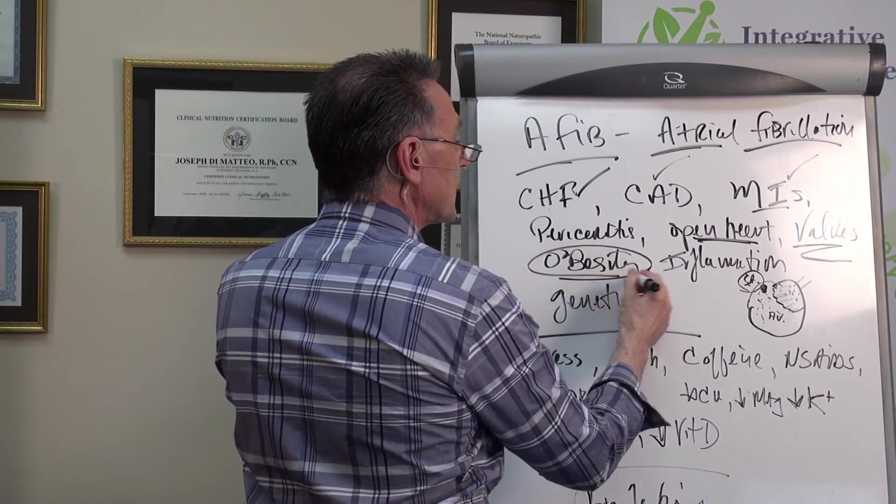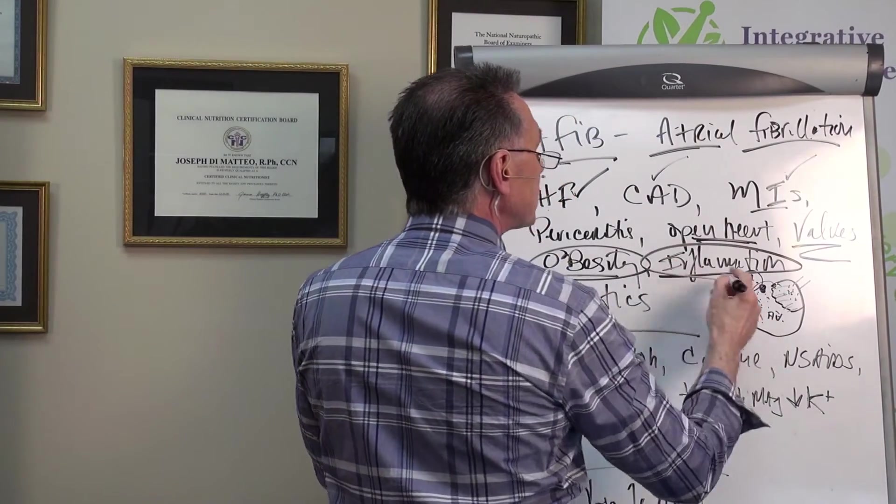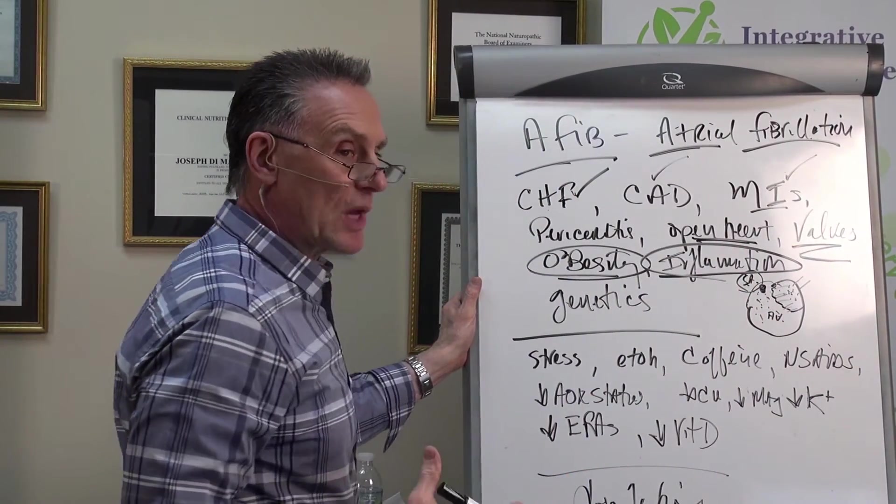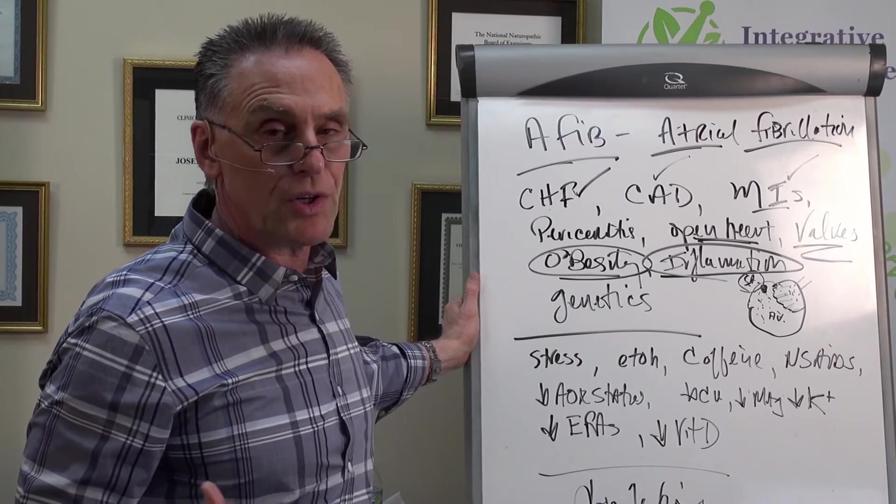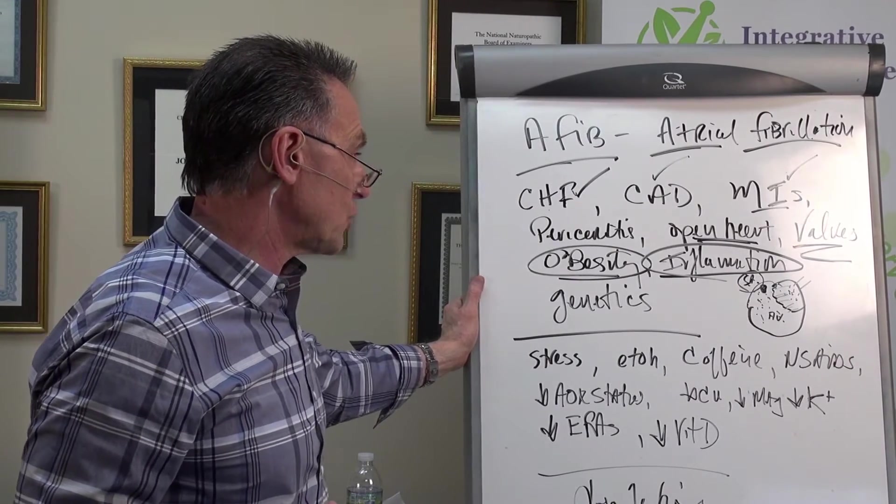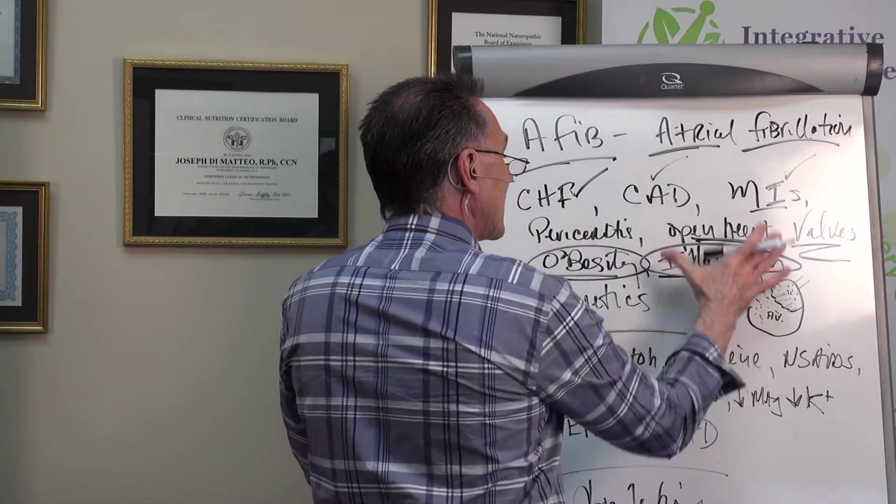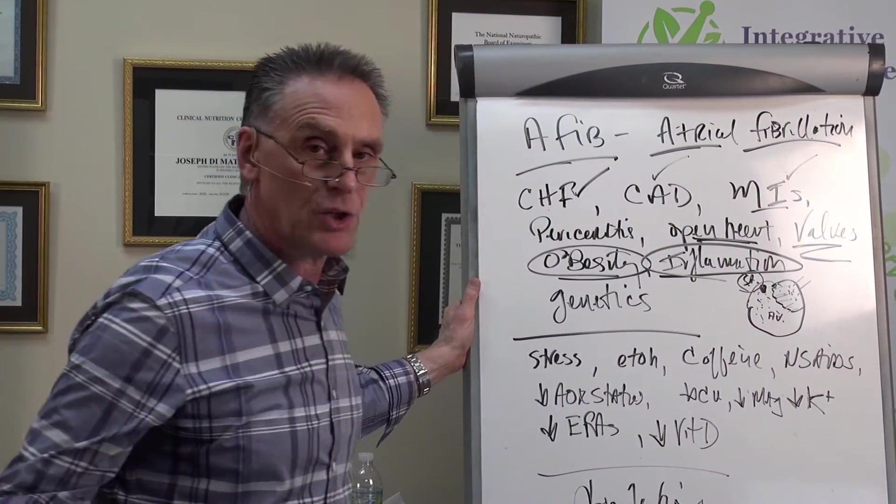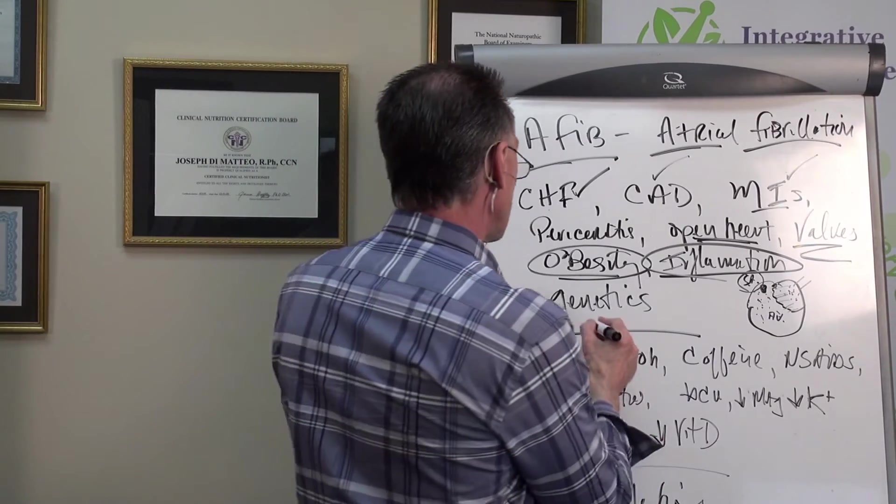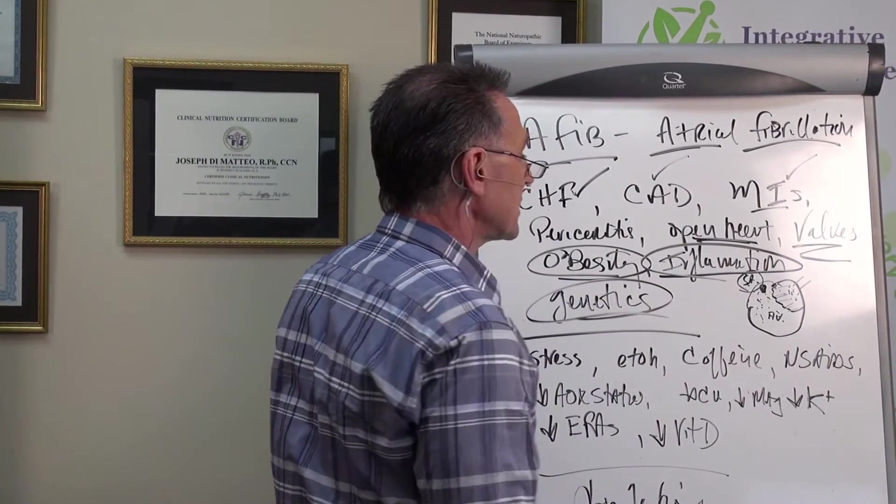You could have just come out of open heart or been in open heart or just recently had it. That puts you at a higher risk for AFib trauma to the heart. You could have damaged valves, higher risk. Now we get into the things that are not disease state, if you will, but obesity.